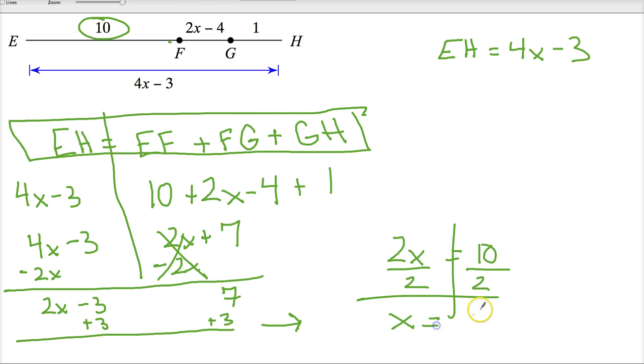Sometimes they'll want to know a specific distance, like how long is it. So I would just plug the 5 in. So if I need to know how long EH was, for instance, I would do 4 times 5 minus 3, which is 20 minus 3, 17.